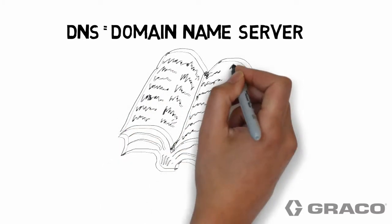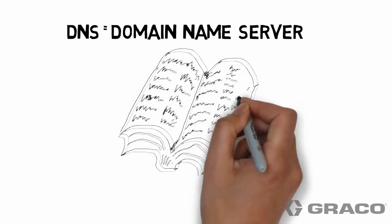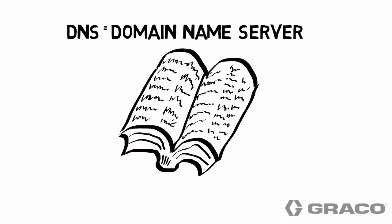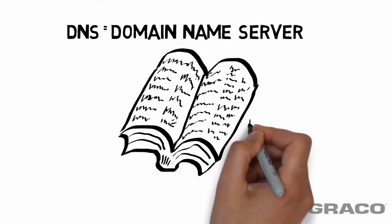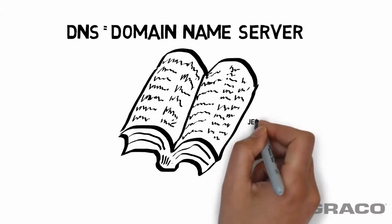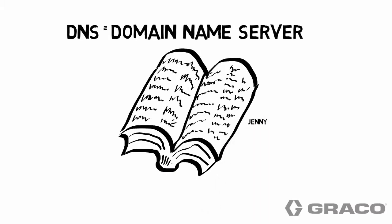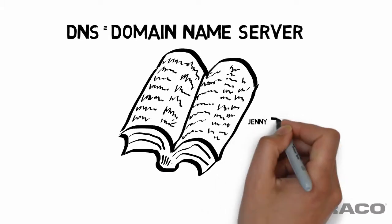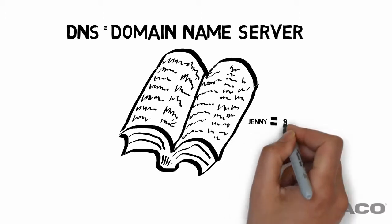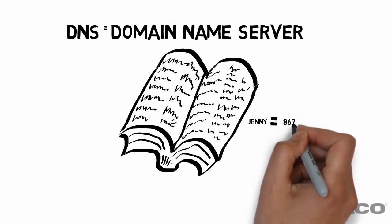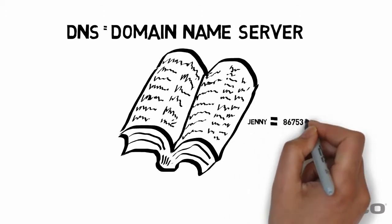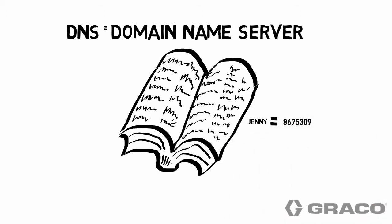You can think of a DNS as an Internet phone book that maps domain names to IP addresses. So for example, you could use the name Jenny instead of using 8-6-7-5-3-0-9. Much easier to remember.